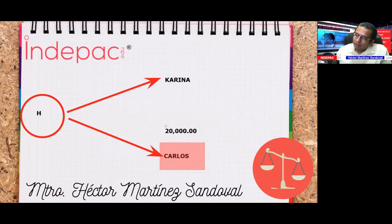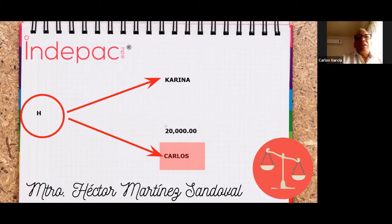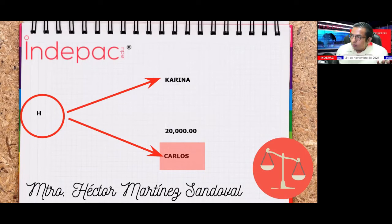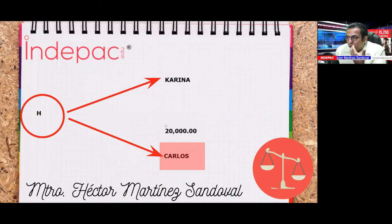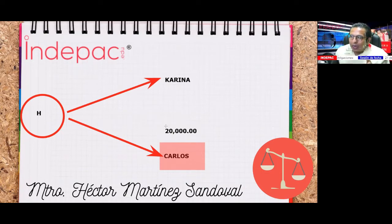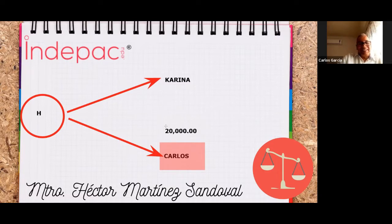Si no hay un vínculo jurídico, ahí está la laguna donde se puede exigir. Si no podemos justificar por qué recibiste el dinero, ahí está el problema del enriquecimiento ilícito o sin causa. Carlos pregunta: si hago una transferencia y me equivoco de persona, ¿puedo reclamarla? Por supuesto, es el tema del enriquecimiento ilícito. Primero de forma bilateral, y si no, se inicia una acción civil; hay que valorar si vale más que los costos del juicio.